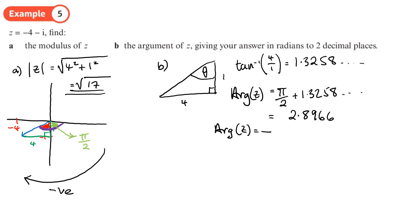There is another way: you could instead work out the angle using tan⁻¹(1/4), then do π minus that answer to get the angle highlighted in purple, and then put a negative sign in front — you still get the same answer. You should now be able to do Exercise 2b on pages 21 to 23.